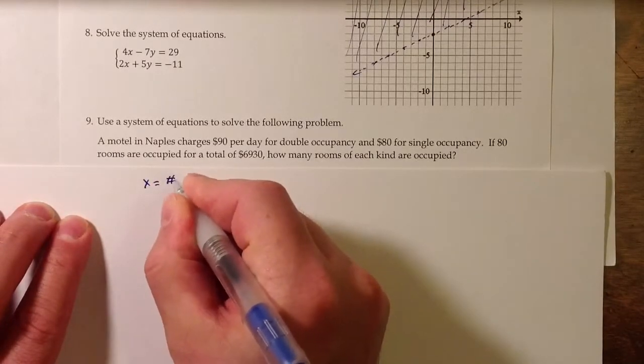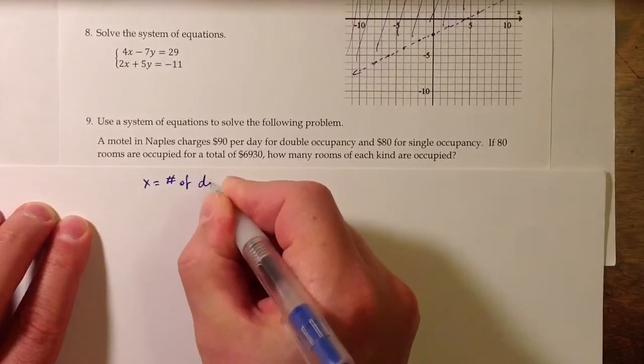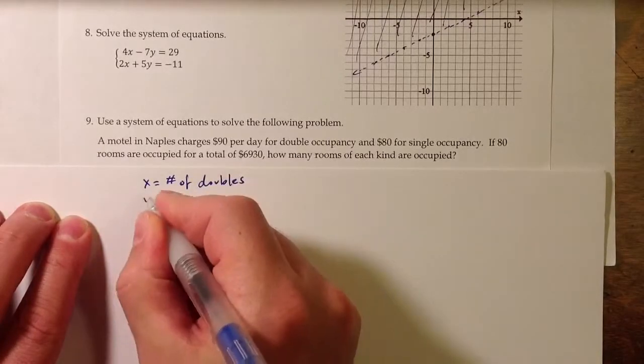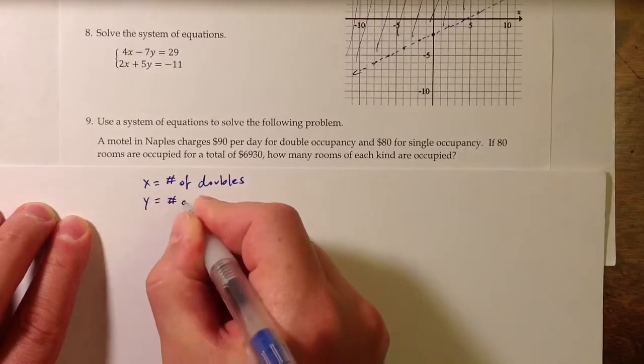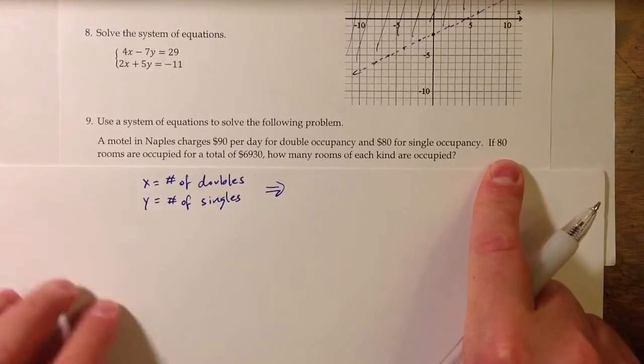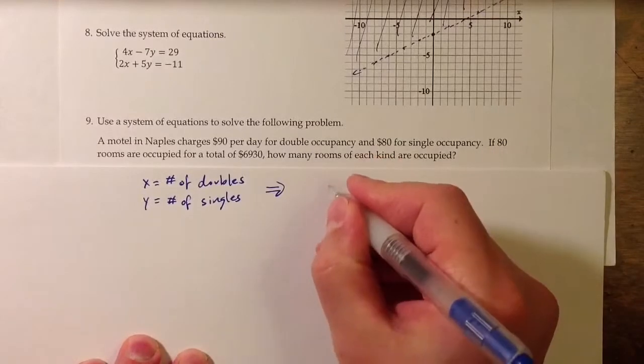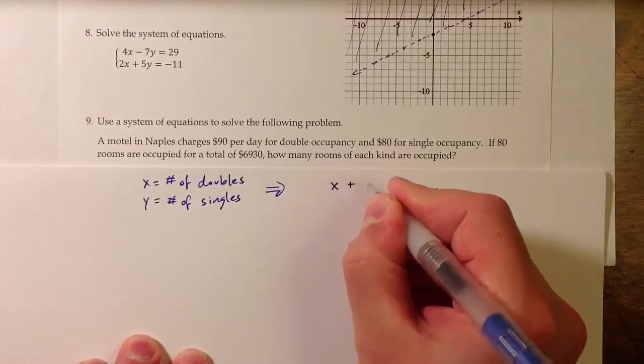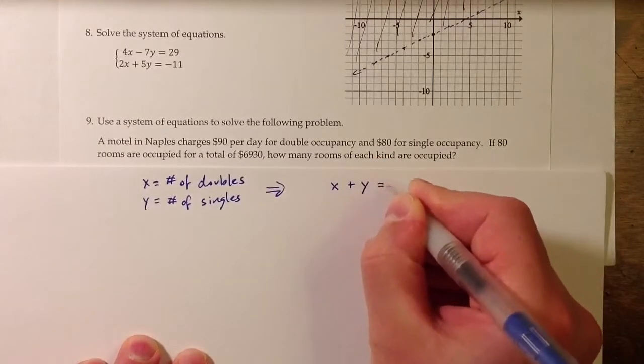So we could let x equal the number of double occupancy, and we can let y equal the number of single occupancy rooms. And what that means, because we know there are 80 rooms altogether, one of the equations we can establish is x plus y equals 80.